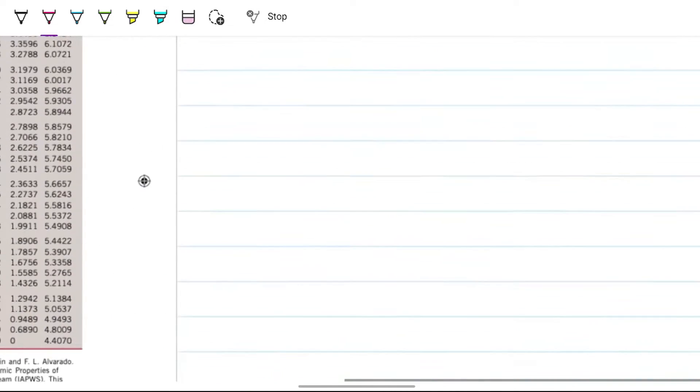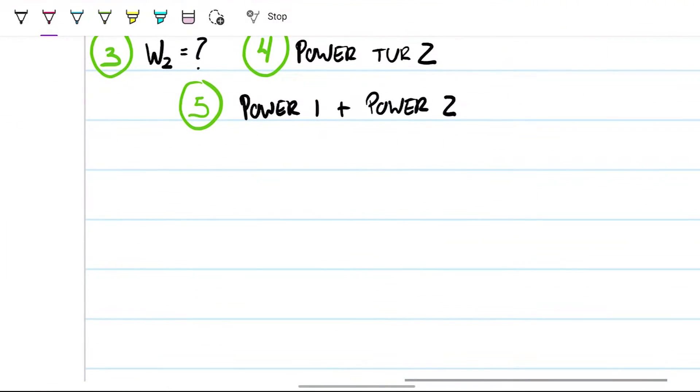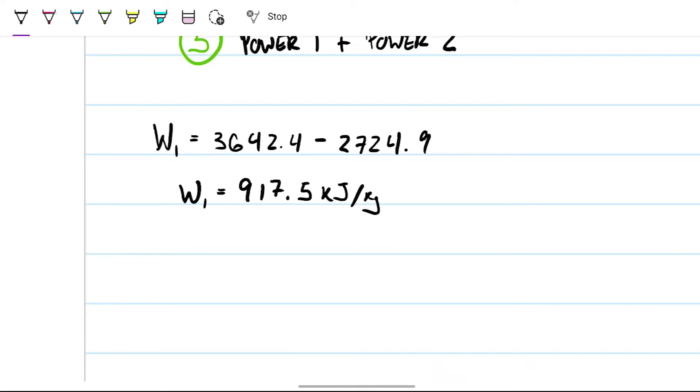I'm going to do this just down here. So work one will be 3642.4 minus the 2724.9, so work one is 917.5. Units are the same for both, which are kilojoules per kilogram.